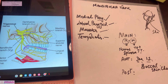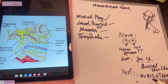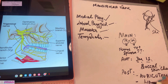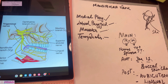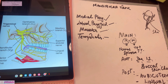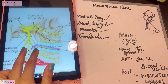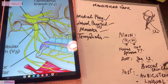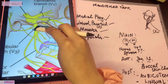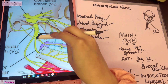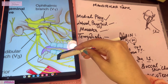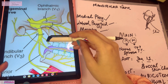The posterior division branches are more important. The first branch is the auriculotemporal nerve, which supplies the auricular and temporal areas. Next are the lingual nerve and the inferior alveolar nerve, which are the two terminal branches of the posterior division. The posterior division is the large division, as can be seen in the image. There is also a motor branch arising from the inferior alveolar nerve.